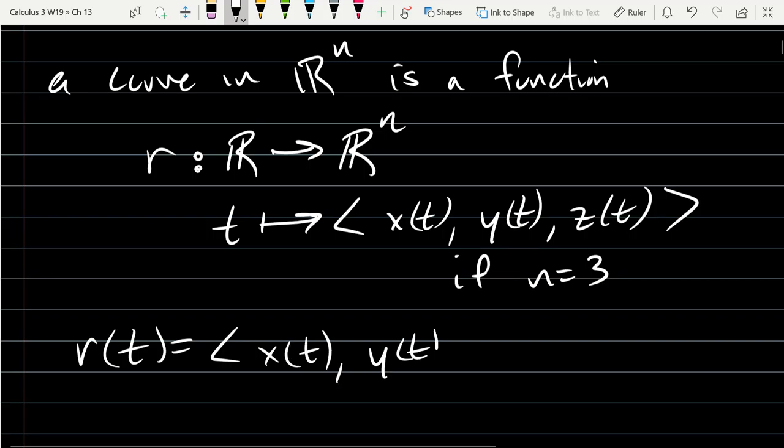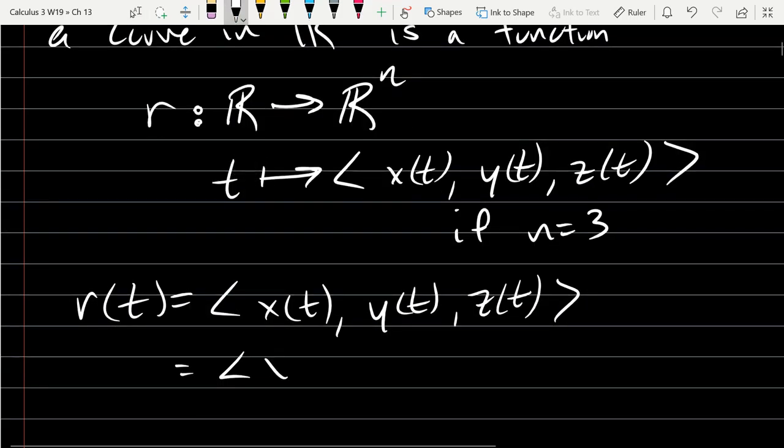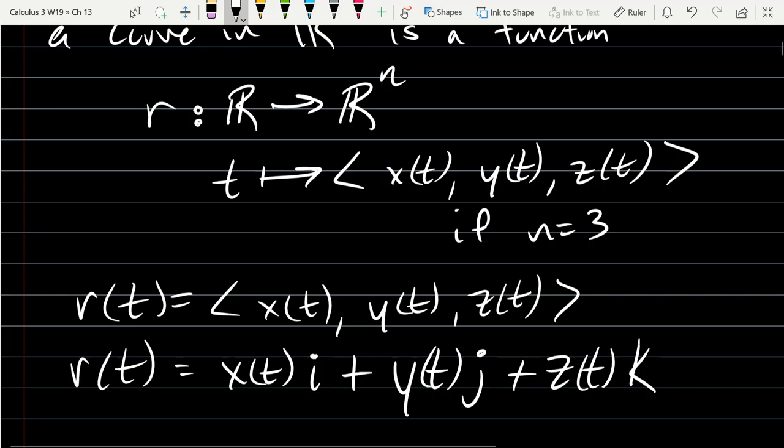So R of t equals x of t, y of t, z of t. Sometimes it's better to use i, j, k's. So you could write it as x of t i plus y of t j plus z of t k.